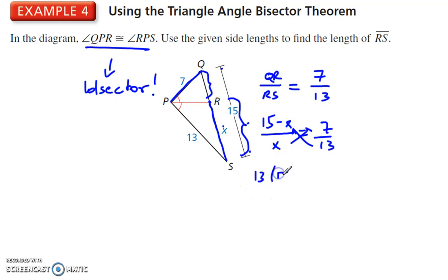We get 13 times 15 minus X is equal to 7X. And so we add 13X to each side. And 195 is equal to 20X divided by 20.